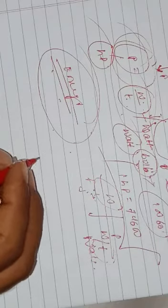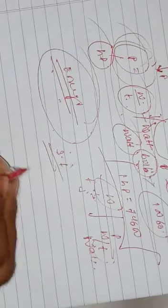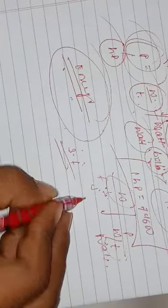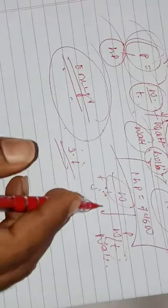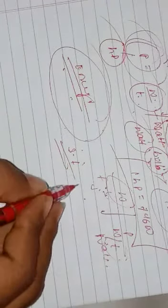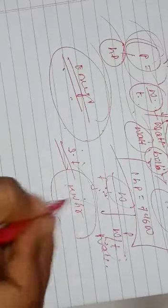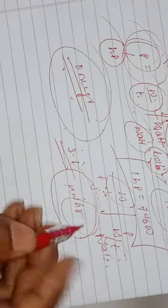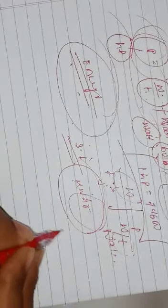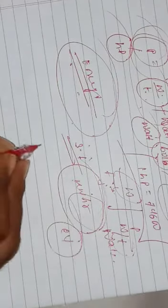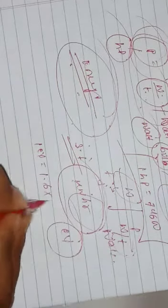The SI unit of energy is Joule — the same as work. A bigger unit of energy is kilowatt-hour (kWh) or watt-hour. Another unit is the electron volt (eV), used for electrical energy: 1 electron volt = 1.6 × 10^-19 Joule. You should remember this conversion.